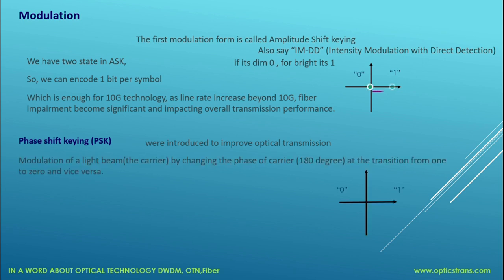In PSK, modulation of a carrier changes the phase of the carrier by 180 degrees at the transition from logic one to logic zero and vice versa. In coherent networks, we also use multiple PSK circuits where the phase change increments by almost 45 degrees.